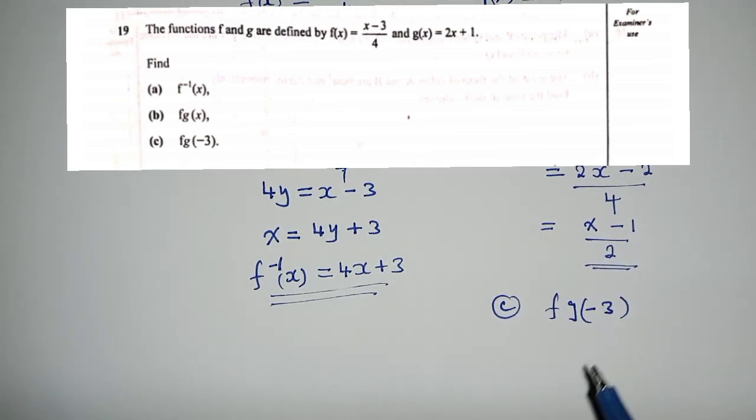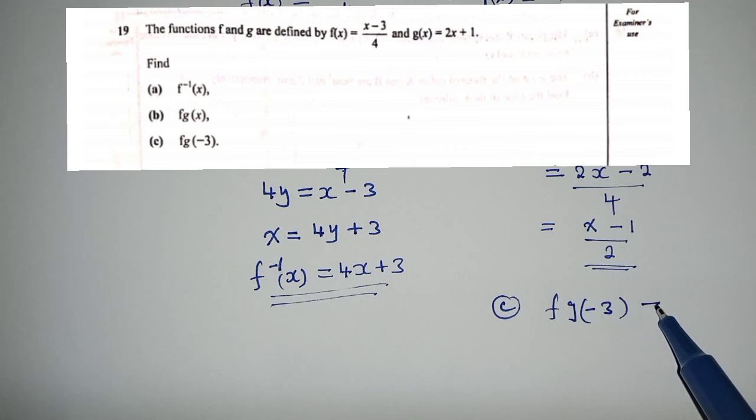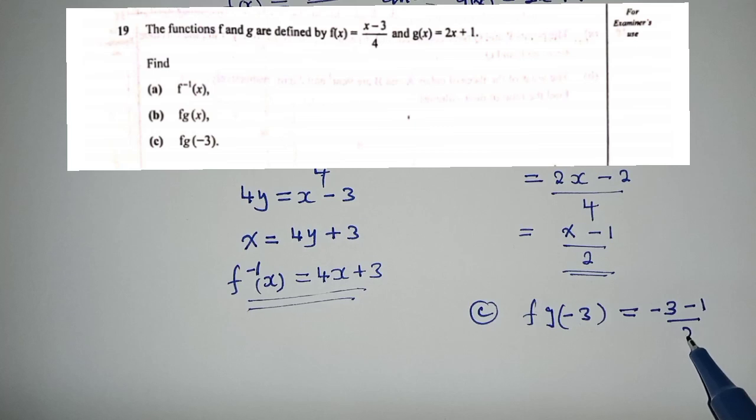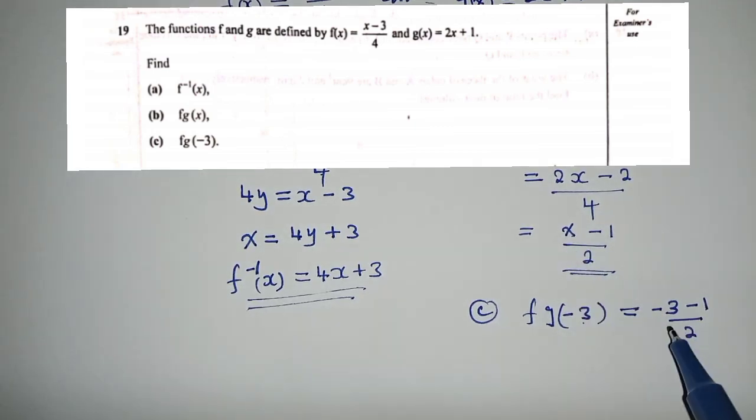For question C, f(g(-3)). How do we understand that? You get the function over here, and where there is x, put what? Put negative 3. And this is how it will look like. So it will be (-3 - 1) / 2. I've just put negative 3 here.